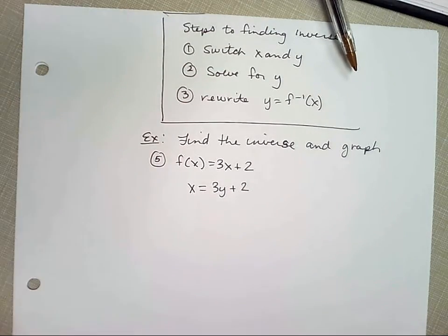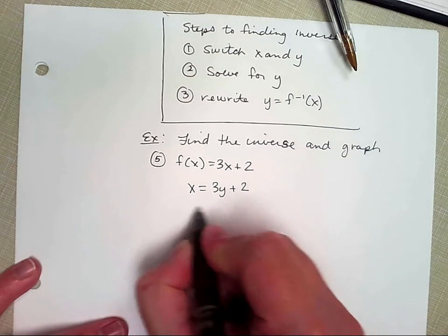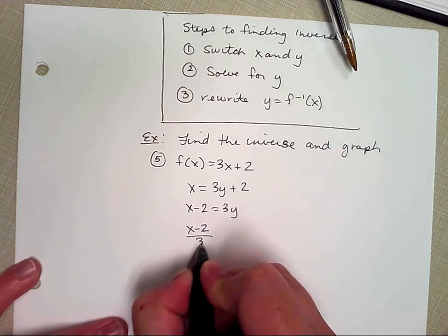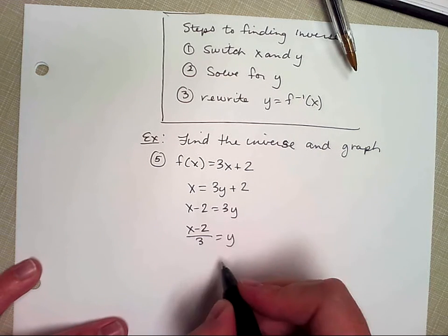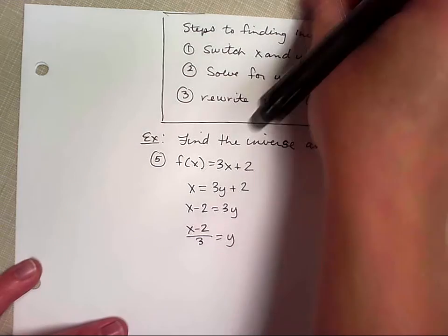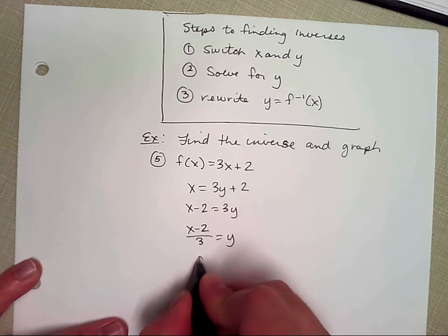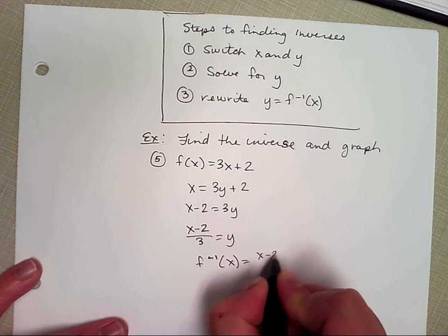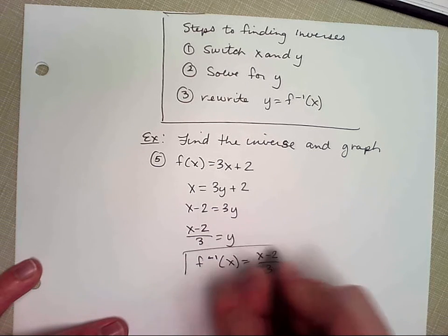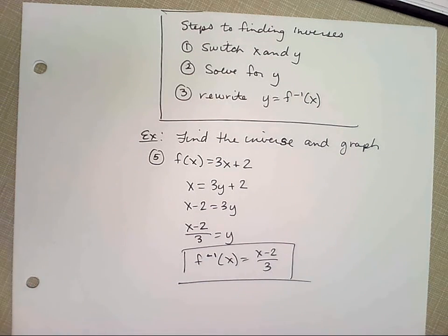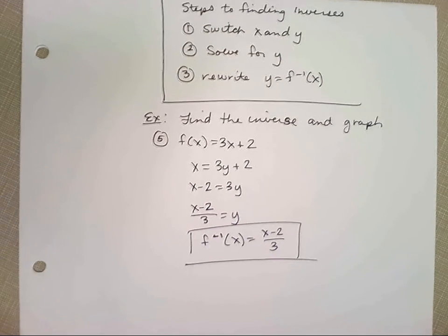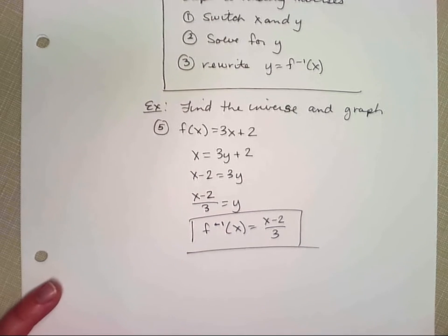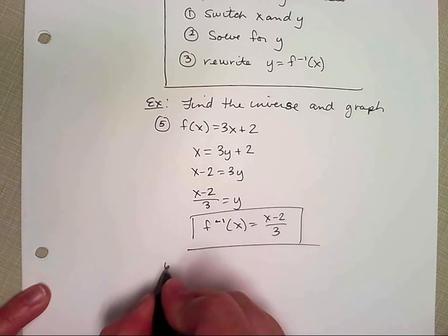Okay, so what did you guys get? Here, I'll just do it. I subtract 2 from both sides. I divide both sides by 3. And then step 3 is rewrite y equals f inverse of x. Did I get it right? Did you guys get it right? It's not hard, right? Like I said, chapter 1 is just kind of a review of algebra stuff.